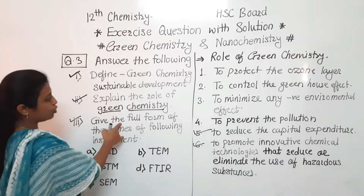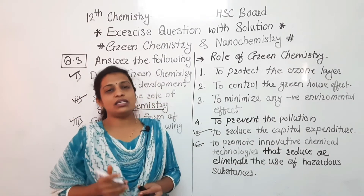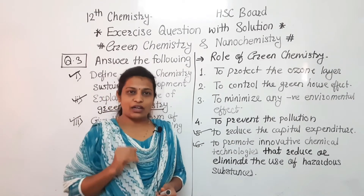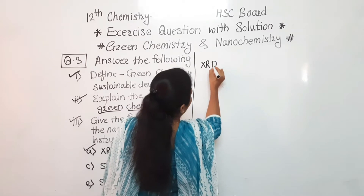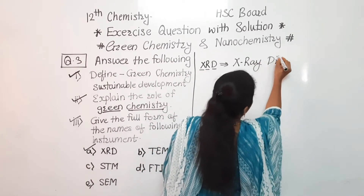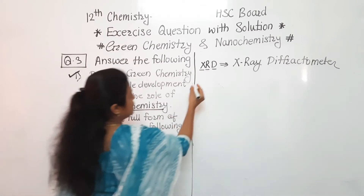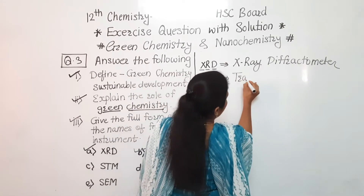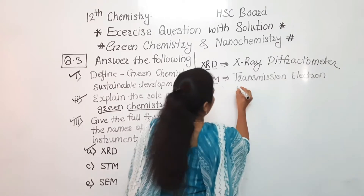Next question asks for the full forms of the following instruments. As discussed in questions one and two, there is a chart in green chemistry listing each instrument and its application — read that chart as well. Starting from the first: XRD stands for X-ray Diffractometer. Second, TEM stands for Transmission Electron Microscope.